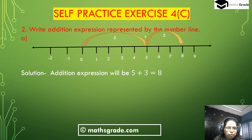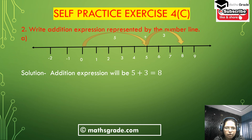Now we solve question number 2. Question number 2 is: write the addition expression represented by the number line. Starting from 0, the number goes to the right hand side to 5 — distance from 0 to 5 is 5. Then starting from 5, the number goes to the right hand side 3 more places to 8. So the addition expression will be 5 plus 3 equals 8.